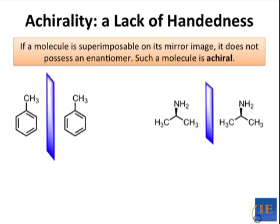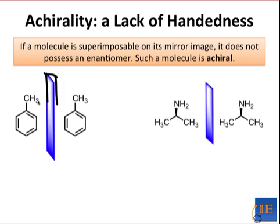Here are two examples of achiral molecules. The left-hand example is toluene. If toluene looks at itself in a mirror, what it sees is going to be exactly the same as what it is — these two molecules are perfectly superimposable on one another. They are homomers of each other.